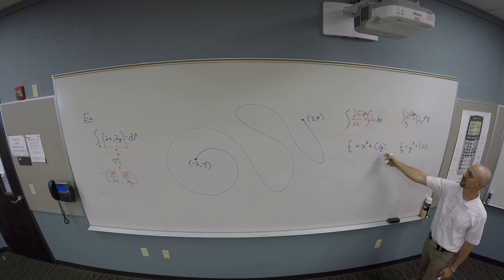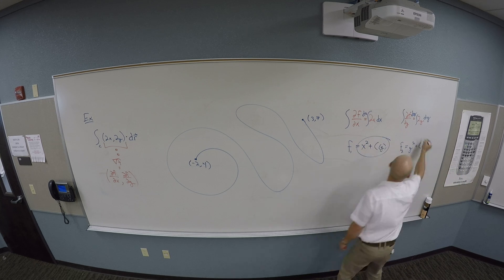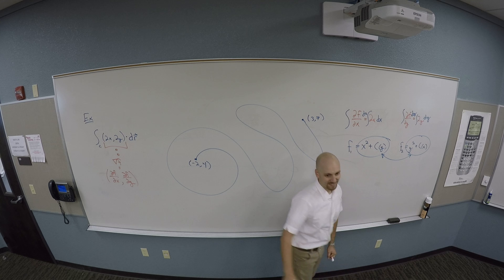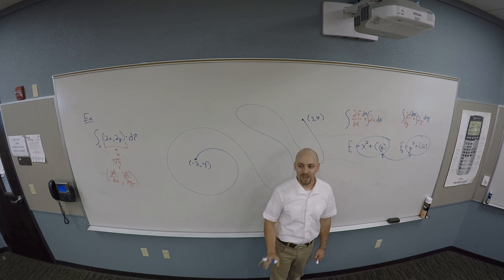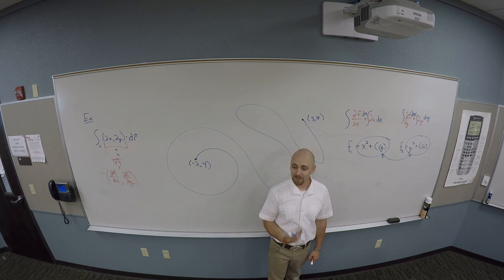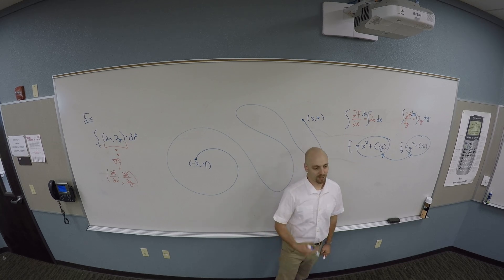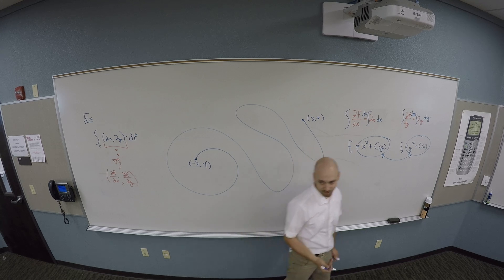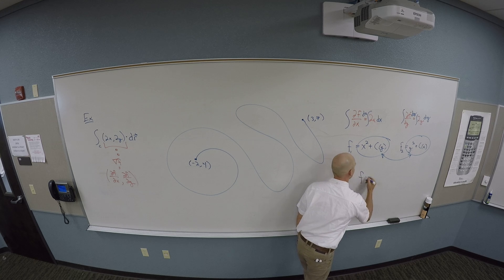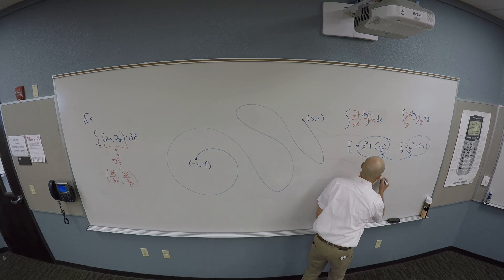This stuff and this stuff has to agree for this to work. If these can be made to agree, you can apply the fundamental theorem of line integrals and this thing will work. If they can't be made to agree, it's not the gradient of something and it probably isn't path independent. What I see here is that F is X squared plus Y squared.